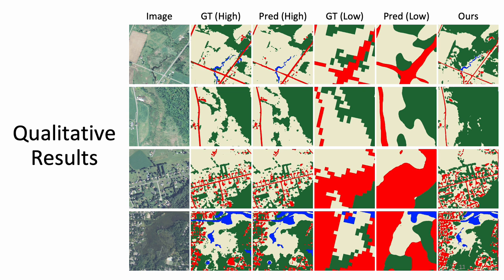In conclusion, we proposed an end-to-end architecture for semantic segmentation that is supervised using low-resolution annotations, but is capable of generating fine-grained predictions. Experiments on a novel dataset demonstrate the potential of our approach to have real-world applicability in the remote sensing domain.